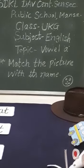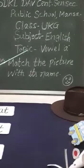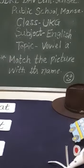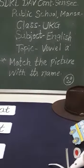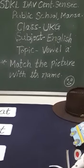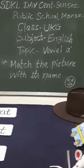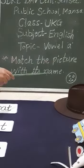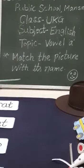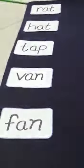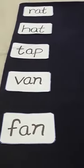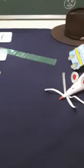Today our subject is English, topic vowel 'a'. As you know, we have already done the vowel sound of 'a'. Today our topic is: match the picture with its name. Here are some objects and here are some words. First, we recognize the pictures.